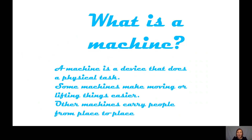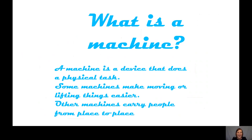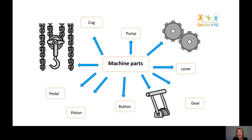I think a machine is a device that does a physical task — it does something for you. Some machines might make moving or lifting things much easier. When we think of cranes, they pick things up, move them and put them down somewhere else. Other machines can carry people from place to place. Think about a car — that's a machine with lots of elements and parts. A lift takes us up and down — that's also a machine. There are many different types of machines around with lots of different parts.